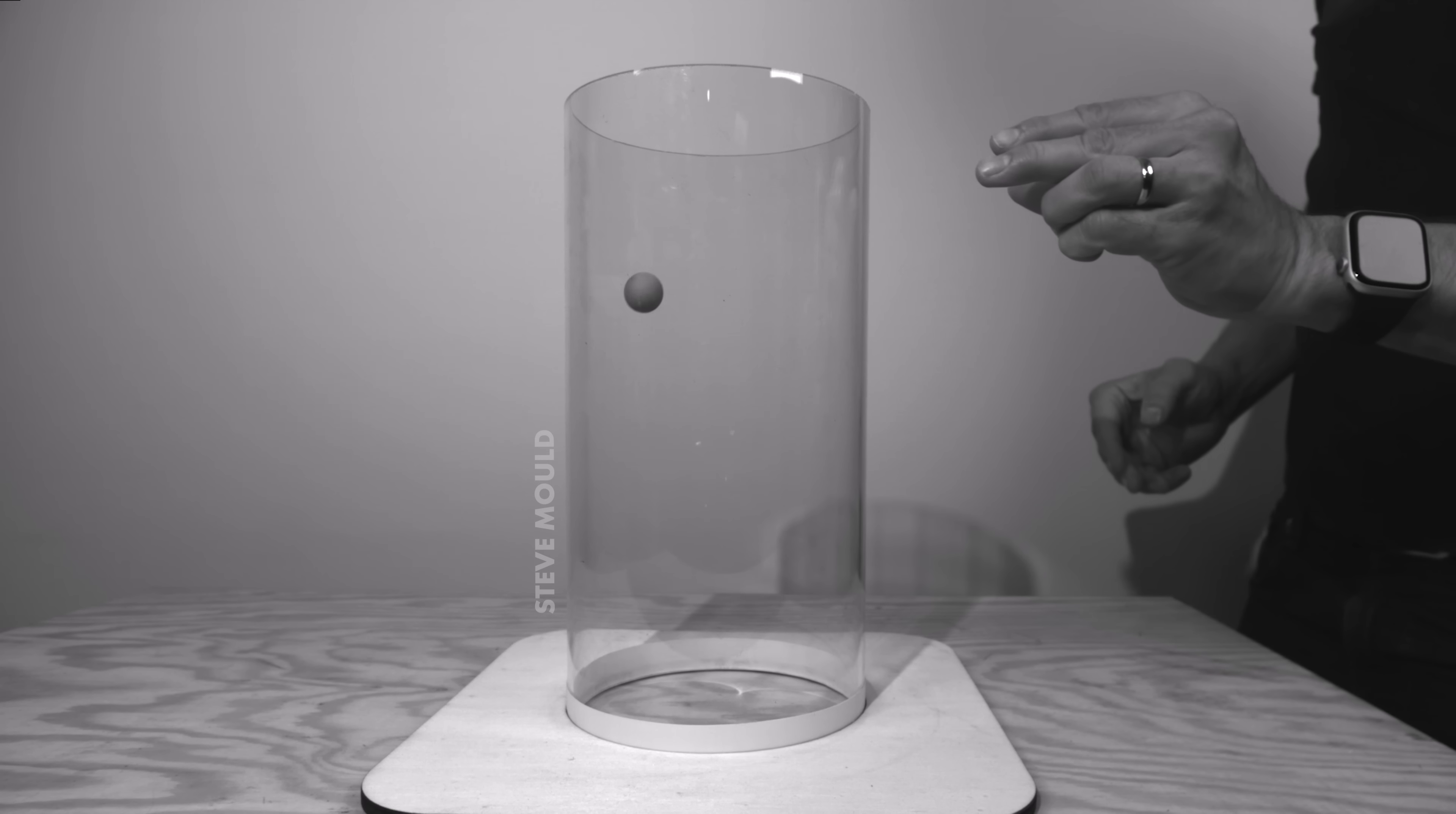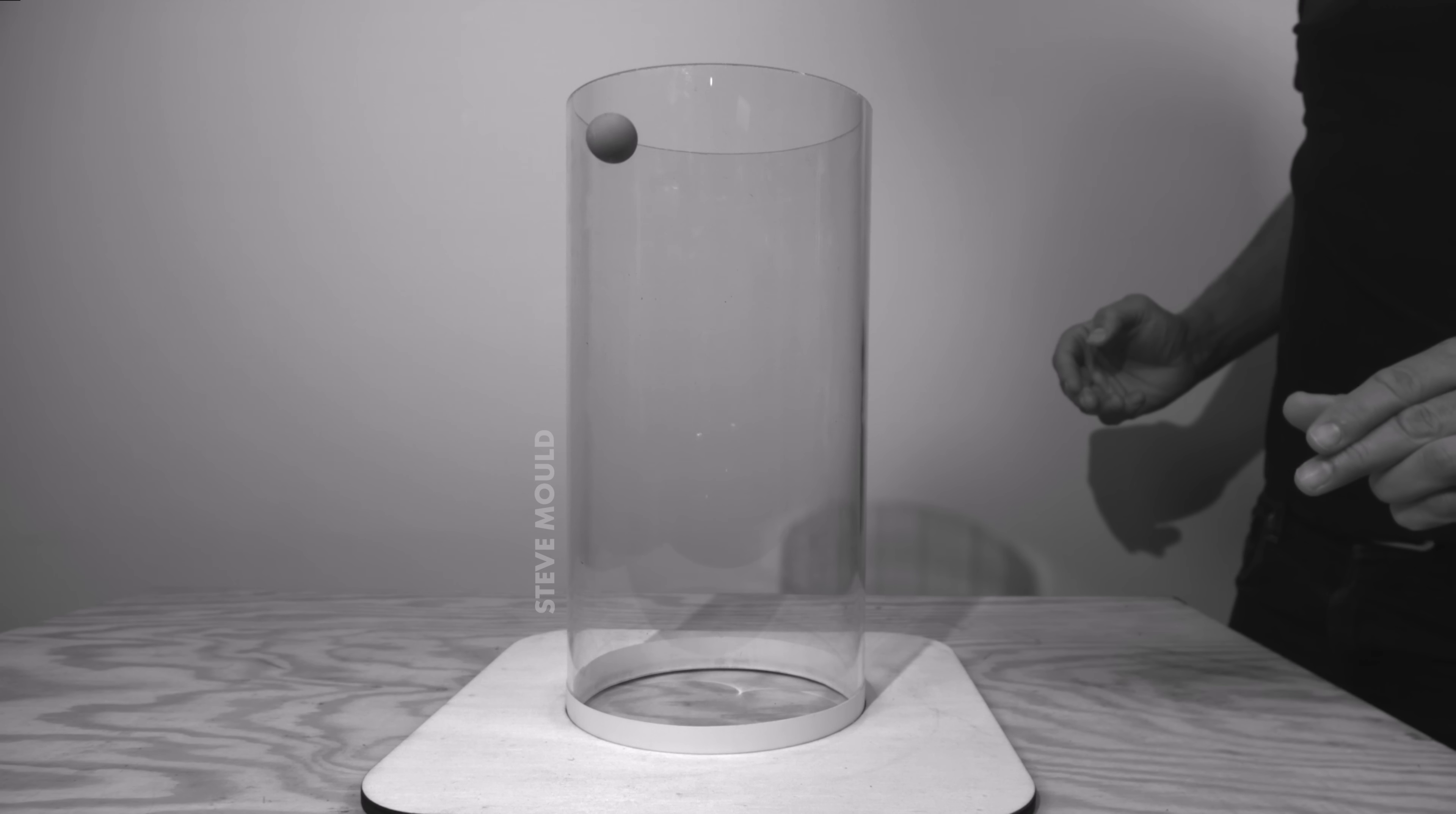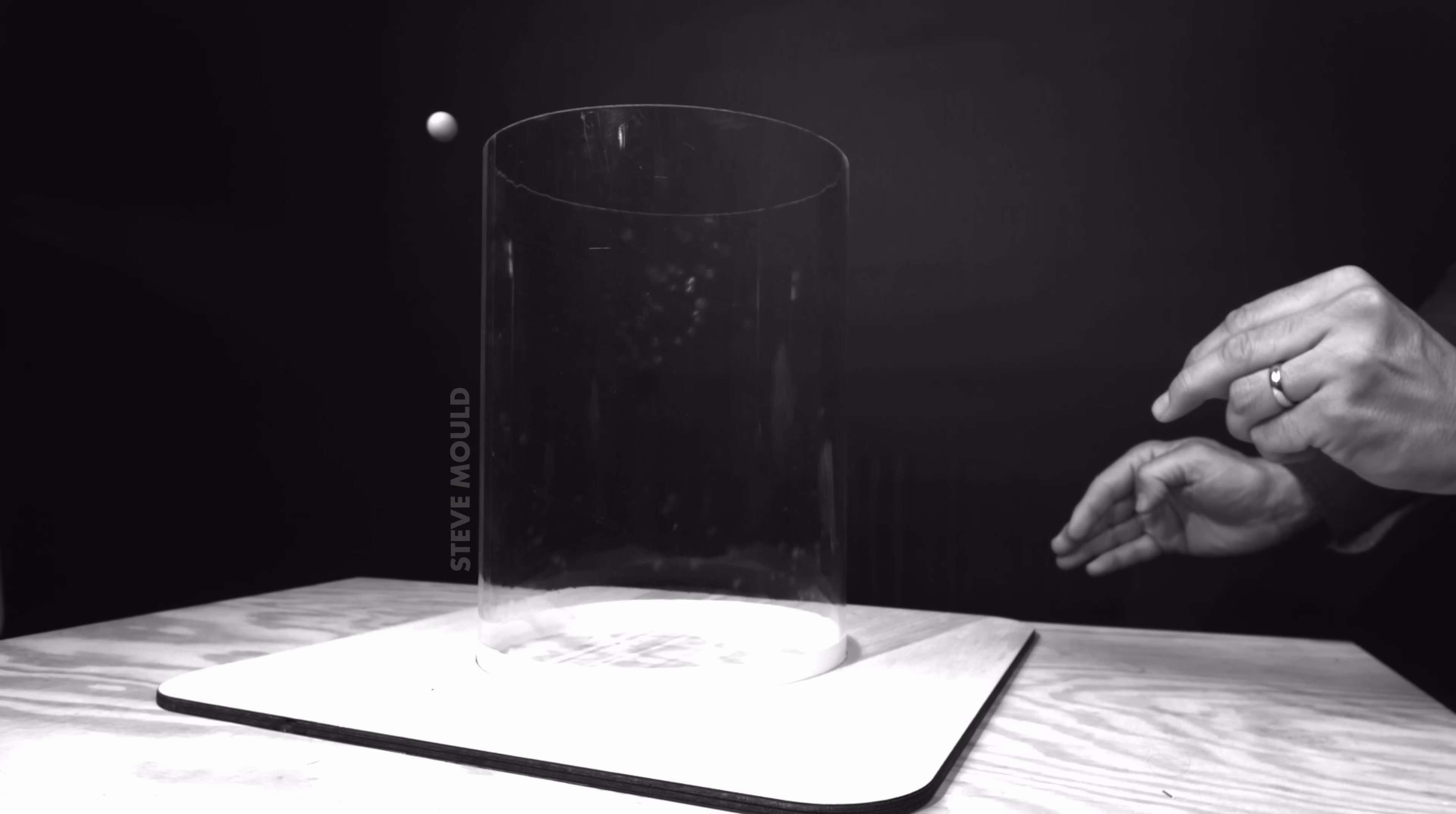My first idea was to think about it from the point of view of the ball. From the ball's point of view, it feels a force flinging it towards the outside of the cylinder. That's just centrifugal force. Yes, centrifugal force is a fictitious force that you only experience in a non-inertial reference frame. But that's exactly what we're doing here. We're looking at it from the point of view of the ball, which is rotating around the cylinder.